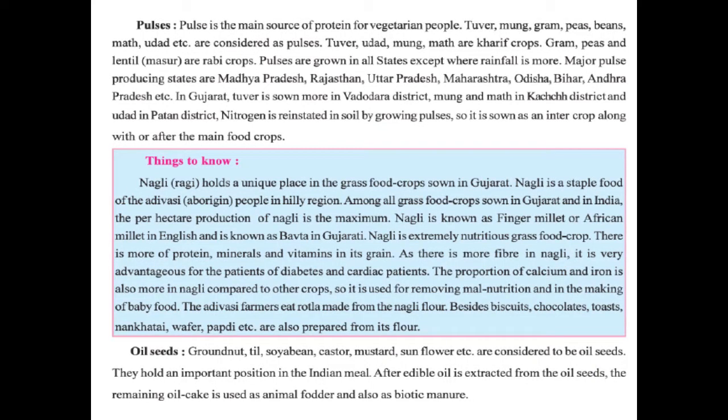The next is pulses. Pulses are the main source of protein for vegetarian people. Tuvar, Moong, Gram, Peas, Beans, Math, and Udad are considered as pulses. Tuvar, Udad, Moong, and Math are kharif crops, while Gram, Peas, and Masur are rabi crops. Pulses are grown in all states except where rainfall is very high.